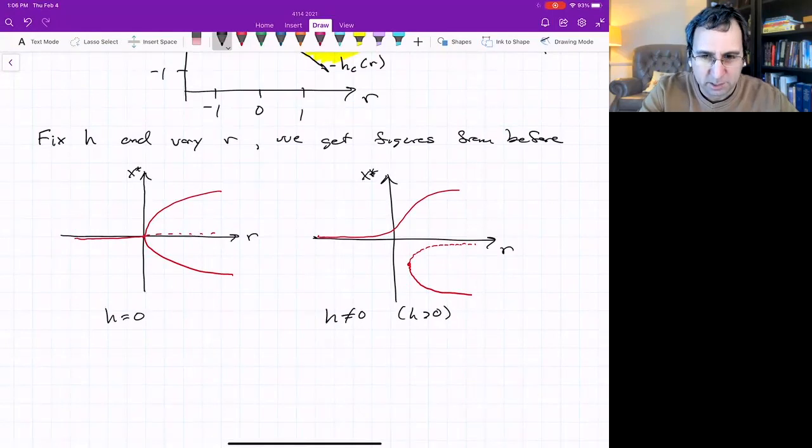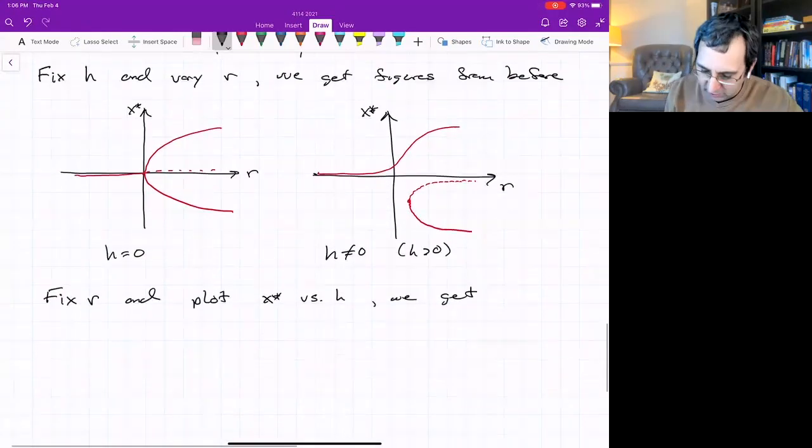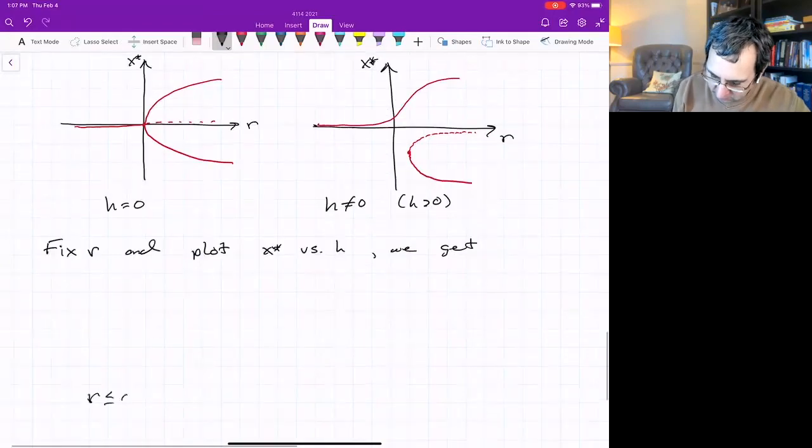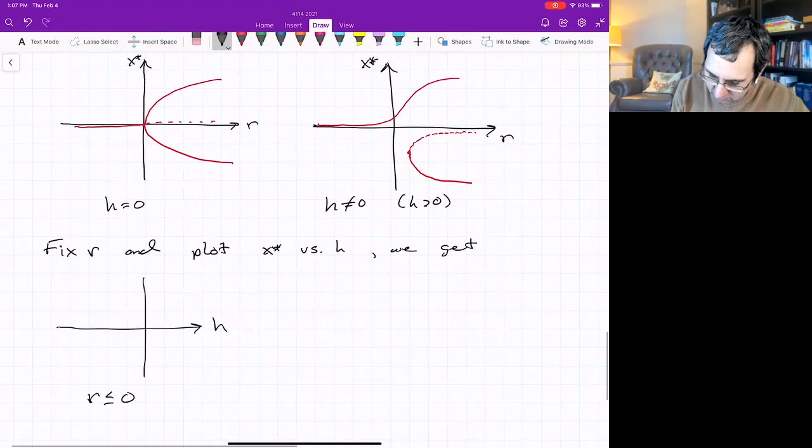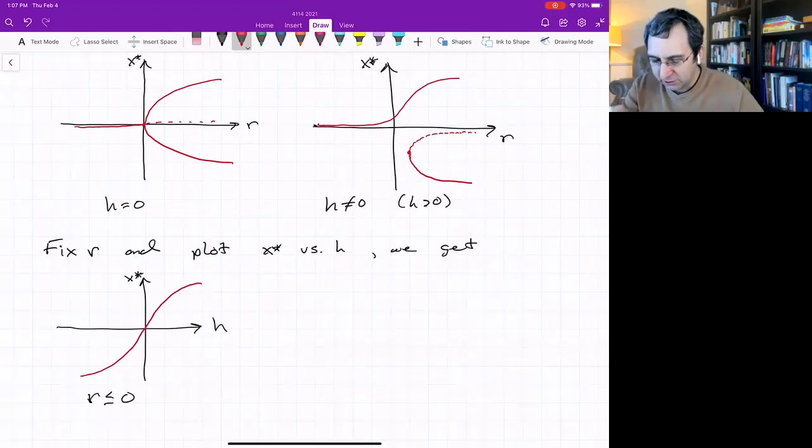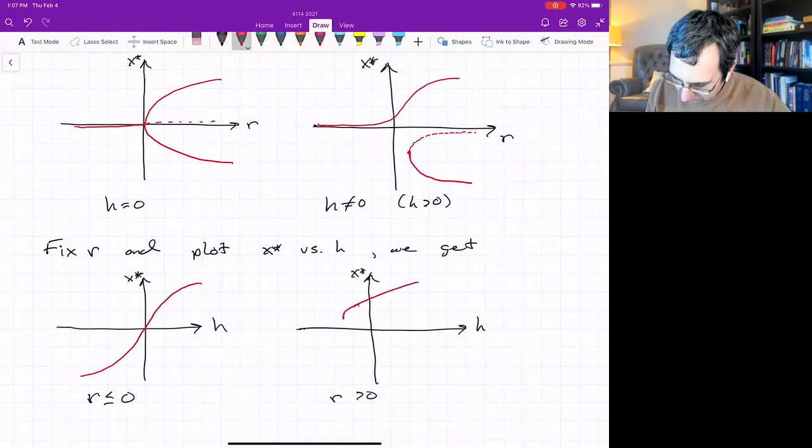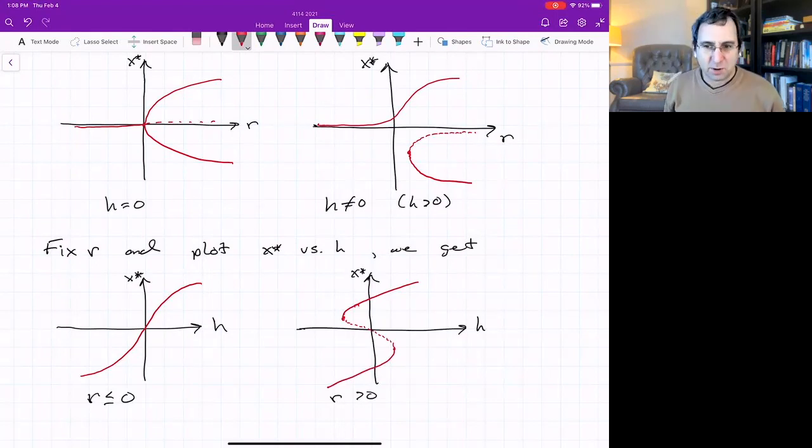We could look at it the other way too. And that's what will kind of be new. If we fix—it means we're considering r is constant—and now we vary h, what do we get? We get for r less than or equal to zero, there is h, there is x star. We'll get a curve that looks like that. These graphs look like an earlier graph just rotated. For r greater than zero, what we'll get is something like this. It stops at a point and then we get what looks like two saddle node bifurcations.